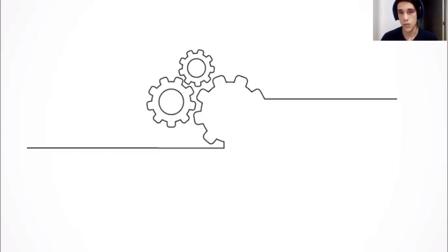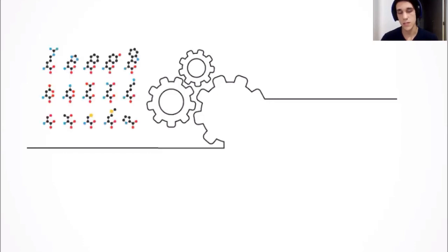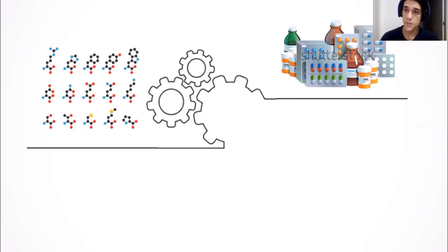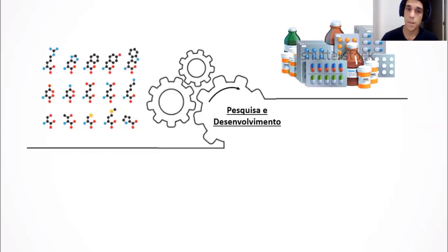Essas drogas, esses compostos que estou representando nesse slide por diferentes estruturas químicas — para que eles sejam disponibilizados no balcão de uma farmácia ou mesmo num hospital, nas suas mais variadas formas, eles precisam passar por um processo de investigação e transformação que se chama Pesquisa e Desenvolvimento.